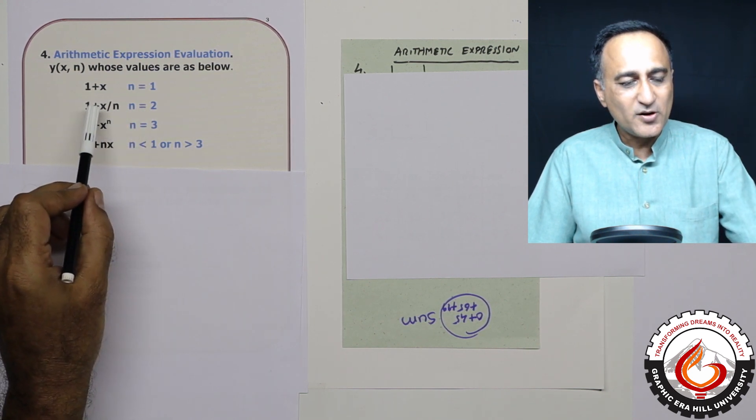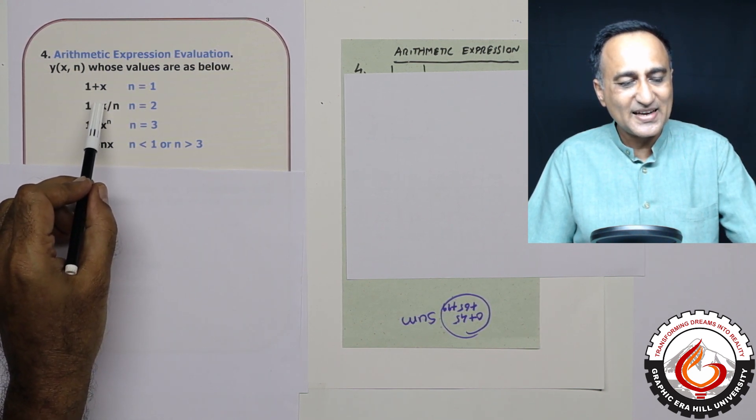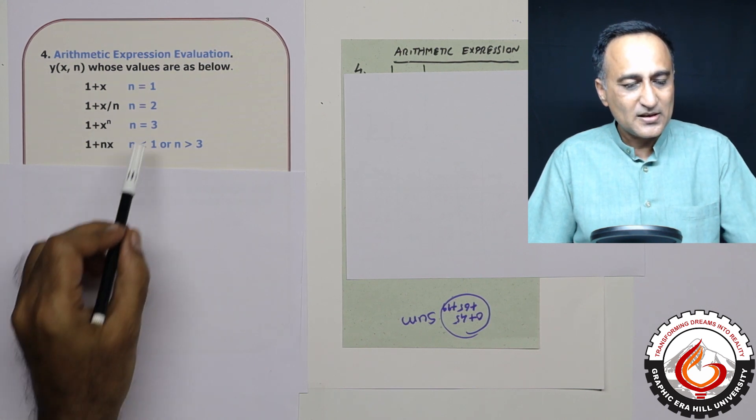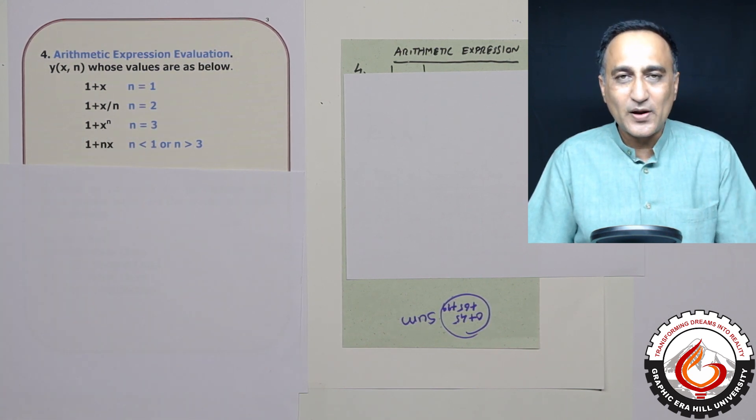If n is equal to two, then you can give some value to x and then it is x upon n. Suppose n is three, x can take the value like seven, eight like that and then you can go ahead and find it out.